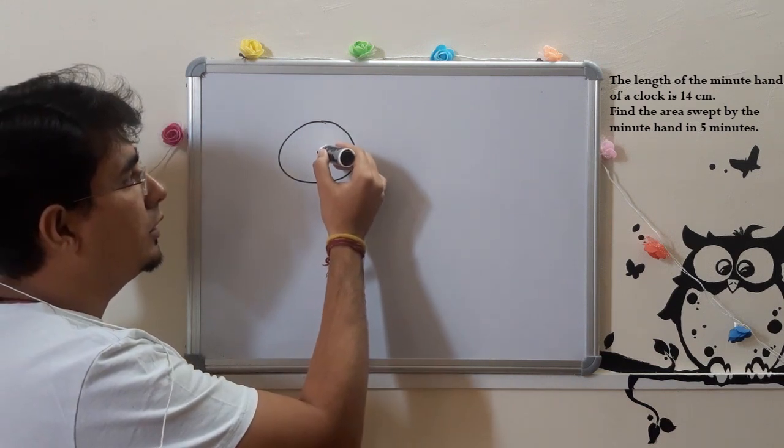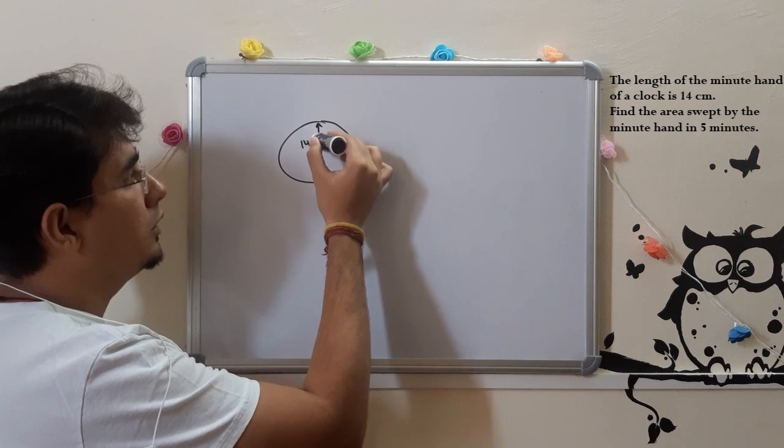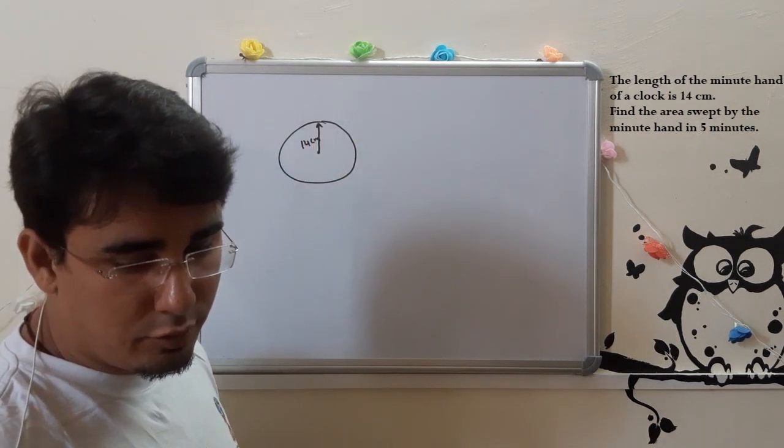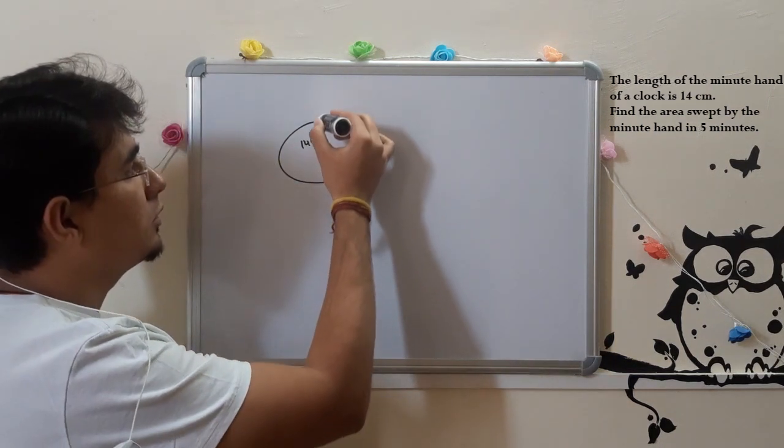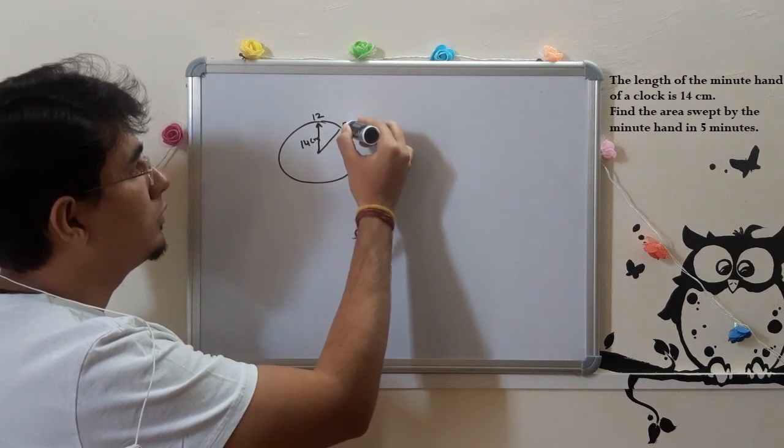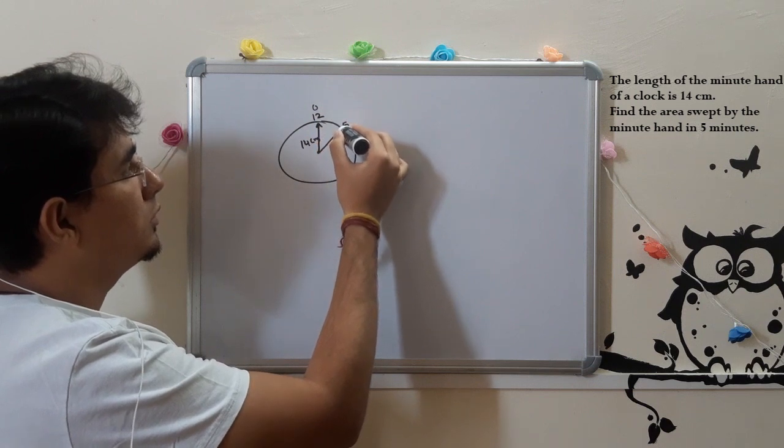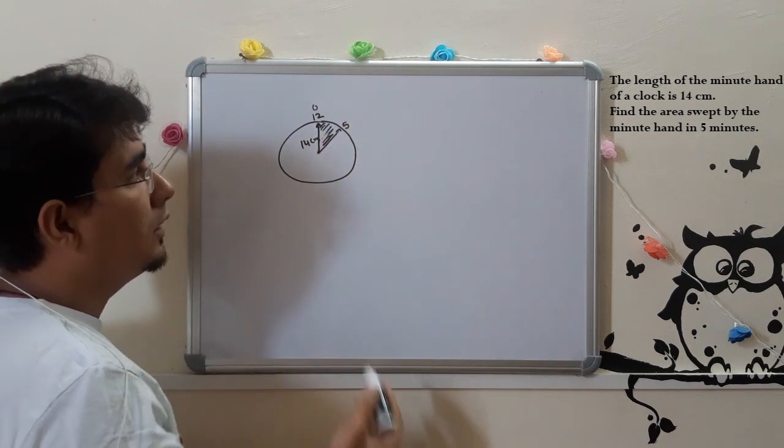So the minute hand is 14 cm. The minute hand is 14 cm. Now we are asking, in 5 minutes, if it goes from 0 to 5 minutes, it will sweep an area.